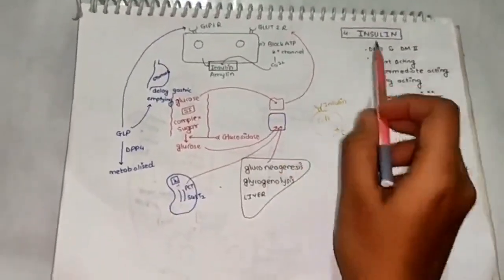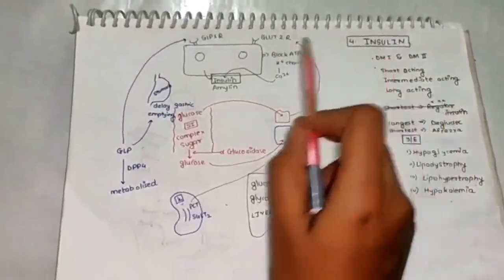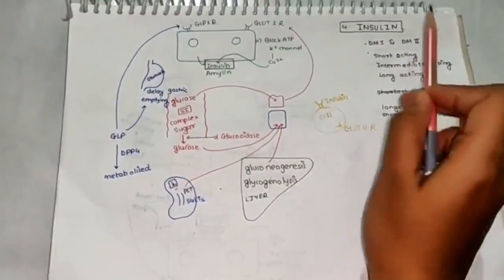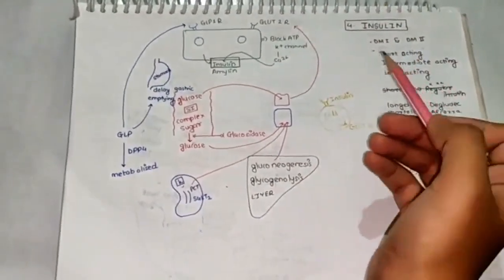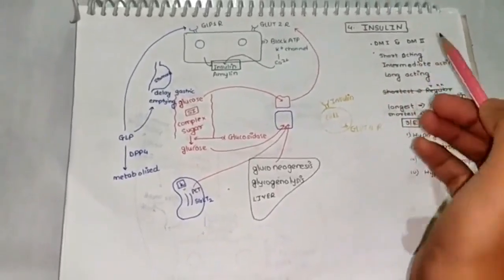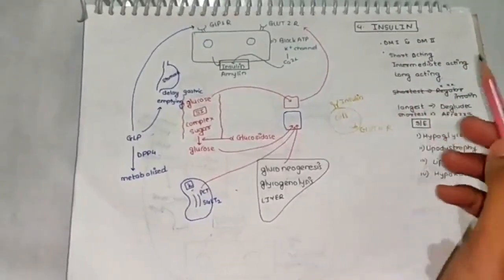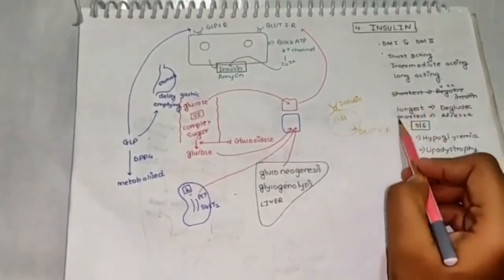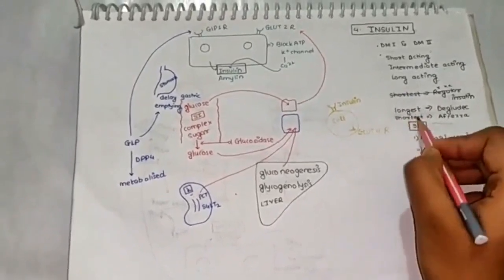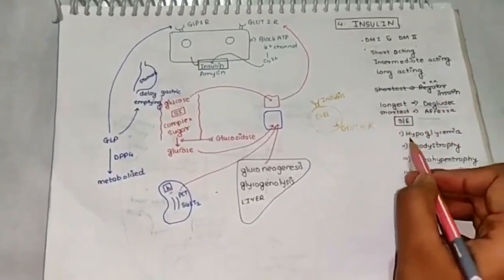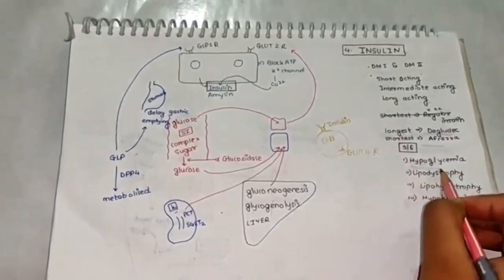Now moving on to the fourth class of drug, which is insulin. Insulin again can be used for both type 1 as well as type 2 diabetes mellitus. There are different types of insulin preparation like short acting, intermediate acting, long acting. And nowadays we are also using the inhaled insulin, which is the shortest acting one, Afrezza. And longest acting insulin is degludec.